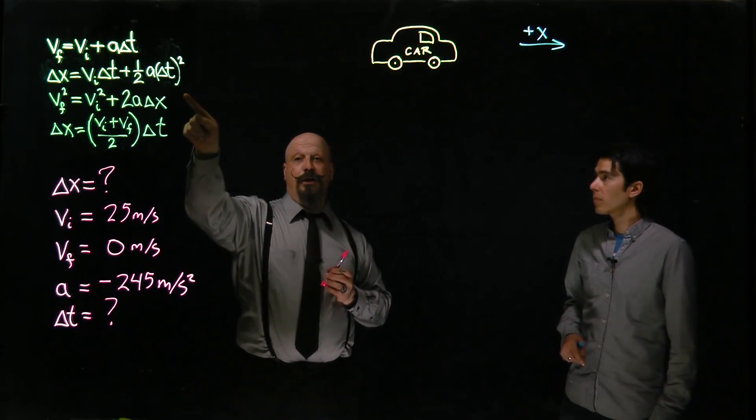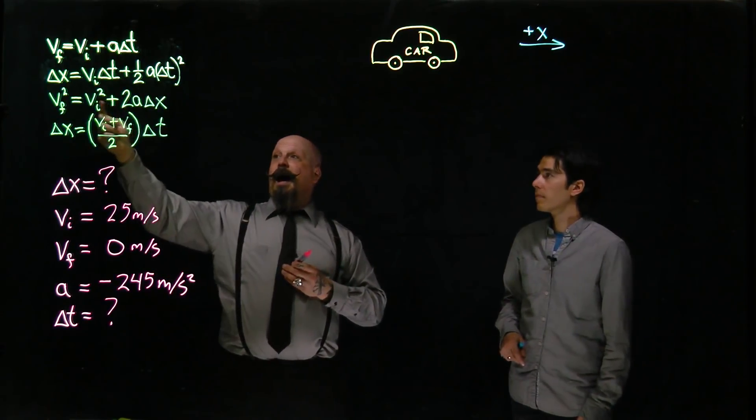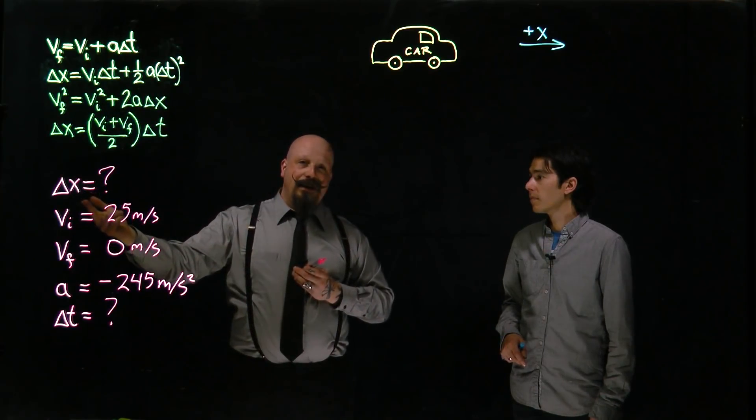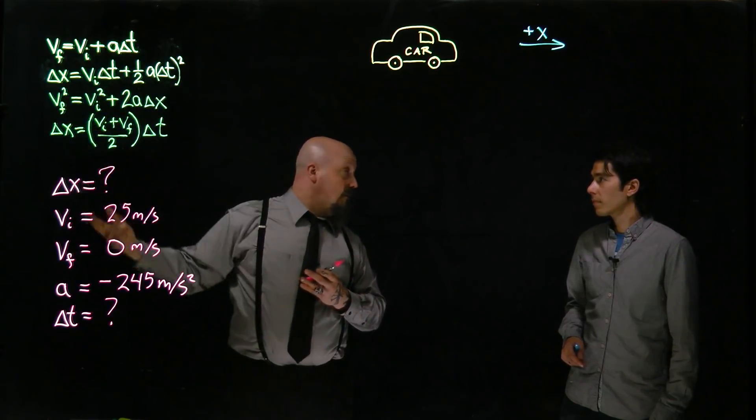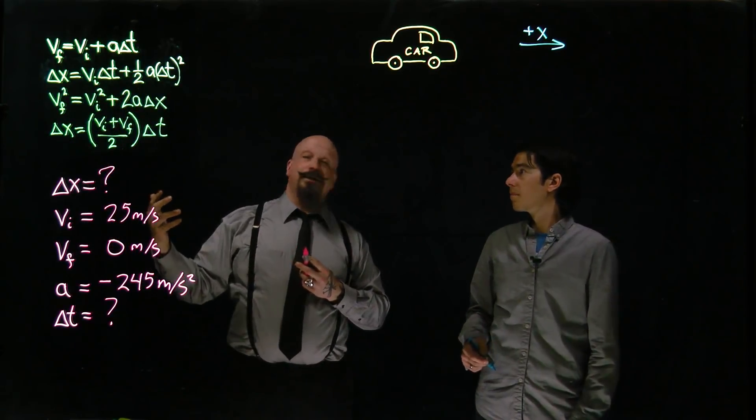Now, I typically default to always using this equation here. But in this case, I have two unknowns. If I'm trying to find delta x, I don't know delta t. If I'm trying to find delta t, I don't know delta x. So this one's useless to me right now. So let's just go through the list.